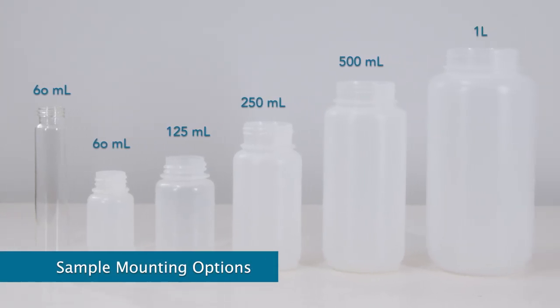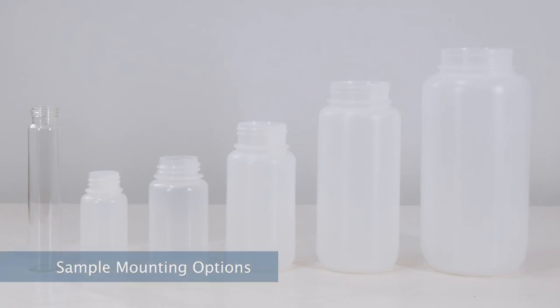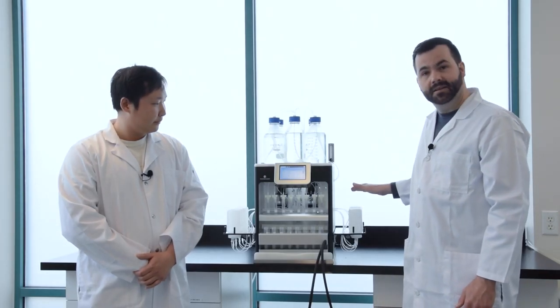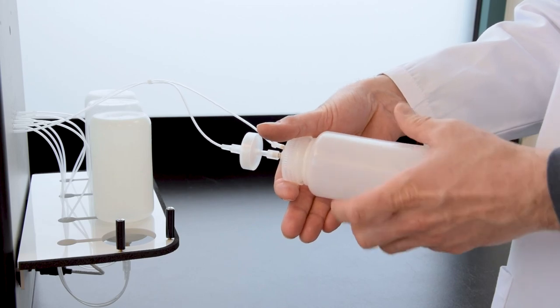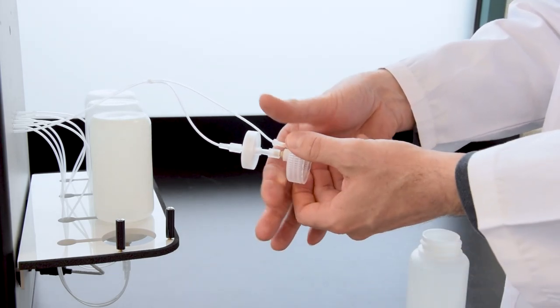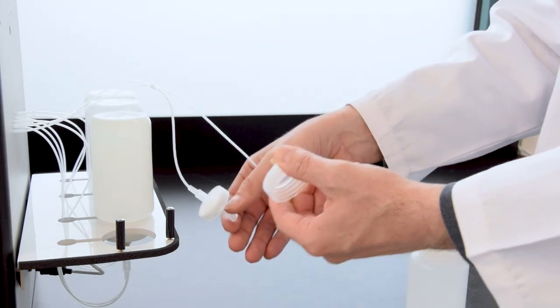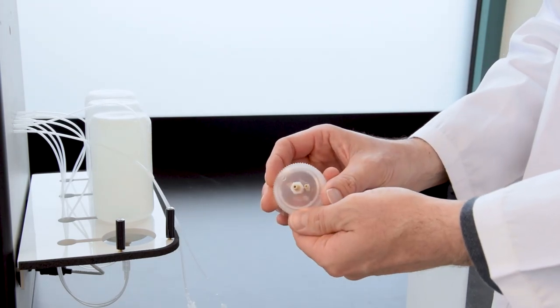You also mentioned that the Mod00P configuration is compatible with a wider range of sample sizes? Absolutely! Allow me to go through all the mounting options for EPA Method 1633. These racks here are compatible with any plastic bottles up to 250 milliliters. The upside-down mounting maximizes sample transfer and is easy to attach the bottles. The adapter caps can also be taken off to be sonicated if necessary.